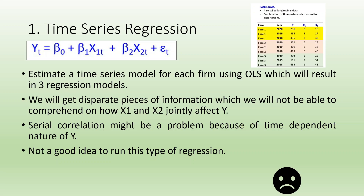If we only use time series regression for this type of data, it will estimate a time series model for each firm using OLS, resulting in separate regression models for firm 1, firm 2, and firm 3. We get disparate pieces of information that cannot comprehend how X1 and X2 jointly affect Y. Serial correlation may also be a problem because of the time-dependent nature of Y. It is not a good idea to run this type of regression.